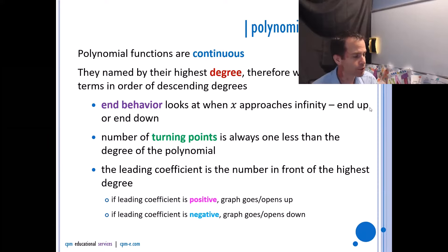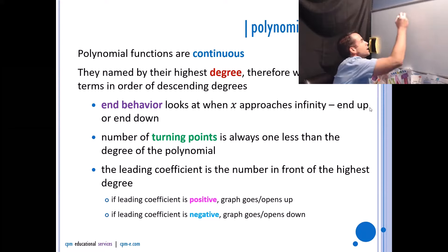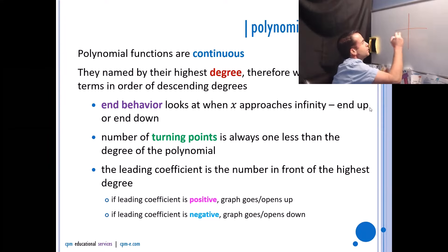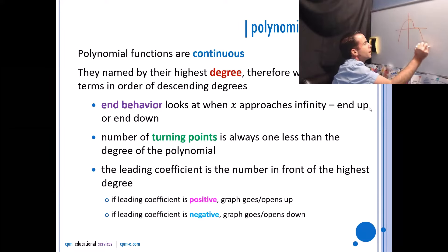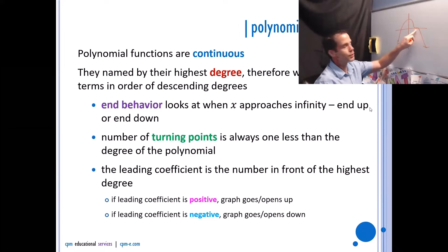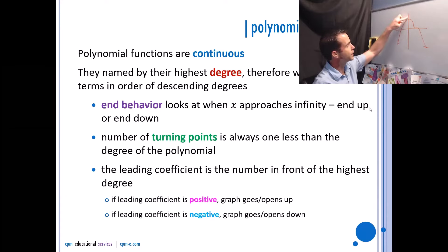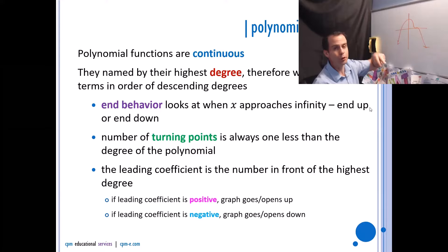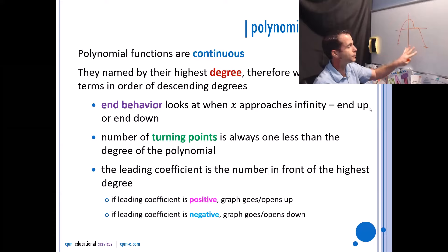The only thing I want to mention so it doesn't cause confusion is an inflection point. If you look at this graph, you would see there's an inflection point here. When you go to count the number of turning points, there would be one here, and the inflection point counts as two turning points. So this would be one, two, three turning points altogether, meaning this would have to be a degree four polynomial.